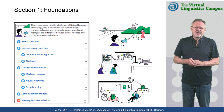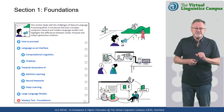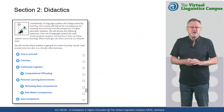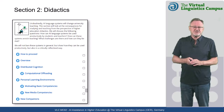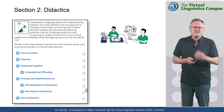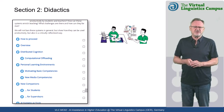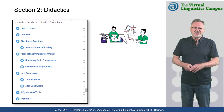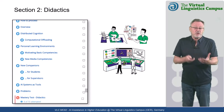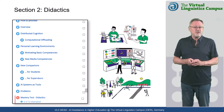Undoubtedly, all language systems will change higher education. For this reason, the second section, labelled Didactics, will look at the consequences for studying and teaching. We will discuss questions such as how AI language systems can be used productively by students and teachers, how these systems can enrich teaching and learning, and what challenges there are and how they can be met.